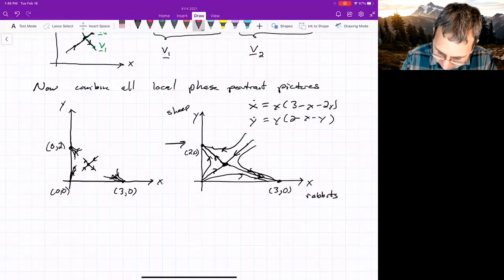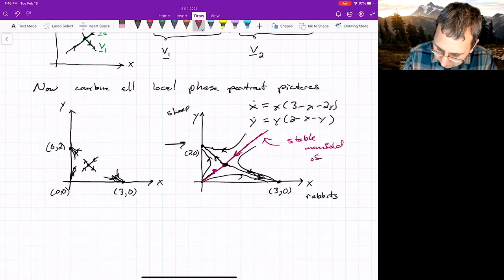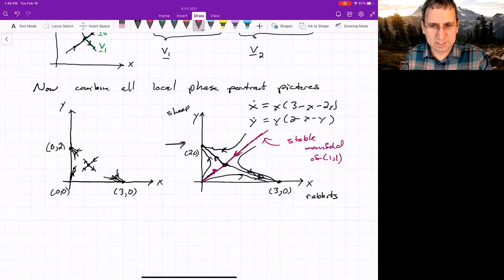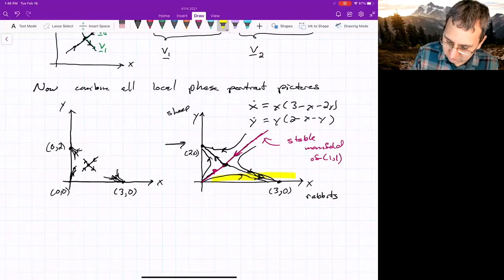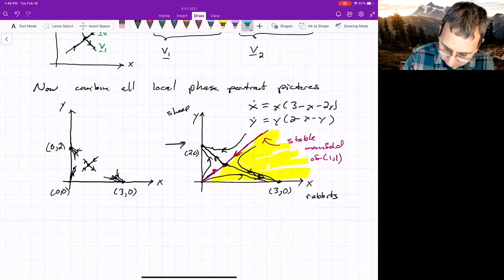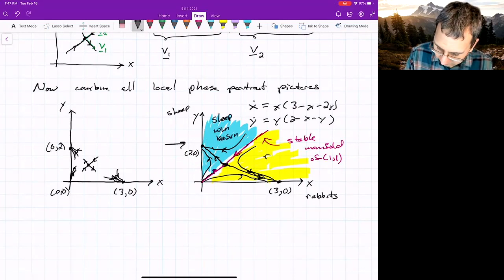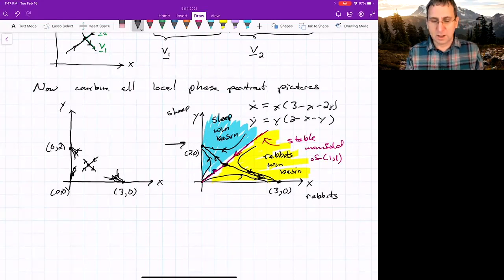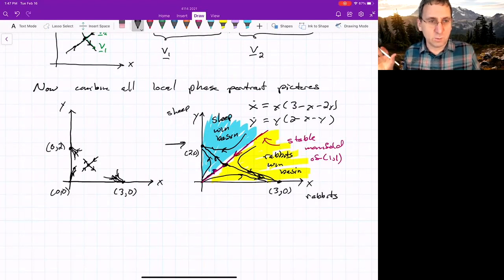So there's actually a special trajectory. I'll do it in maroon here. This is called the stable manifold of the (1,1). It's like the non-linear version of the stable direction. We haven't really said much about that. And it's got two branches coming off of that saddle point, but it separates two regions. The basin of attraction for rabbits win versus the basin of attraction, we'll do that in blue, sheep win, meaning everything here goes to that fixed point. So this is the sheep win basin, and this is the rabbits win basin. So depending on if your initial condition is above or below that stable manifold, that determines ultimately what the end state is here.